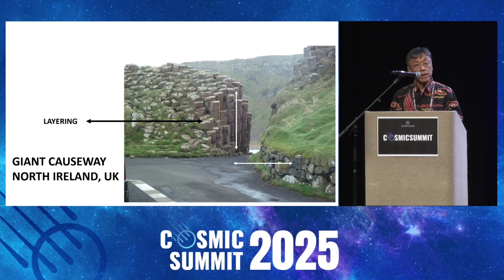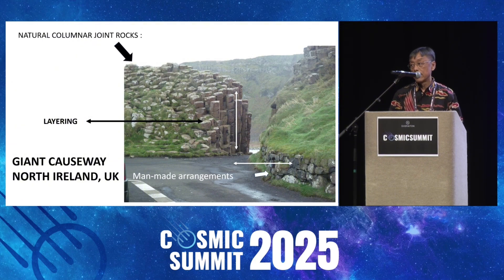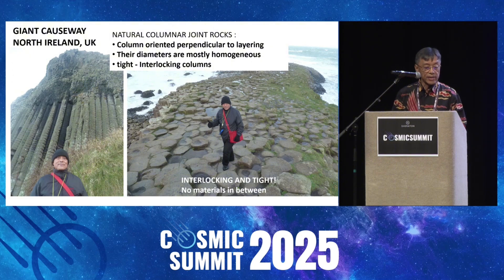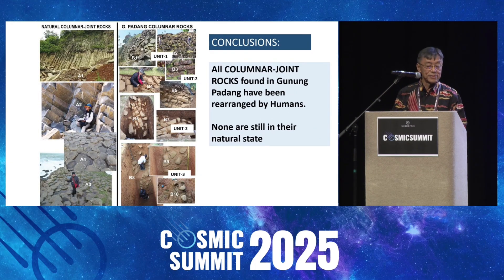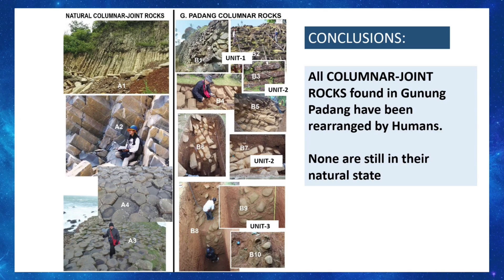Like at Giant's Causeway in Northern Ireland, for example, we can tell which columnar andesite rocks are natural and which are arranged by humans — it's quite different. Natural columnar rocks are usually homogenous in size and very tightly interlocked, with no mortars or fills in between. But at Gunung Padang they are not. The diameters of the columnar rocks there are very varied, there are mortars in between, and they are sized and packed in. These are all signs of man-made construction, not nature.